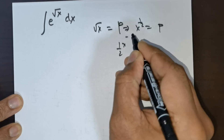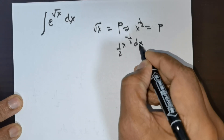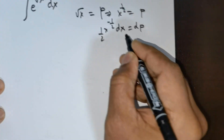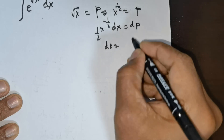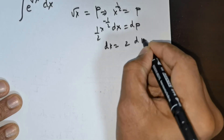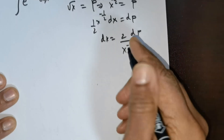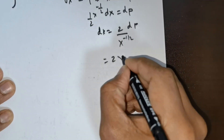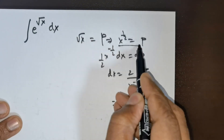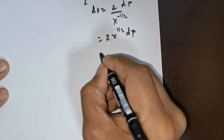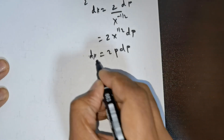Differentiate this. You get x raised to the power of negative 1 over 2 times dx is equal to dp. Isolate dx — push everything to the right. So this is going to be 2 times dp. x raised to the power of negative 1 over 2 comes up, so it's going to be 2 times x raised to the power of 1 over 2 times dp. But x raised to the power of 1 over 2 is equal to p, so substitute that. It's going to be 2 times p dp. This is my dx.